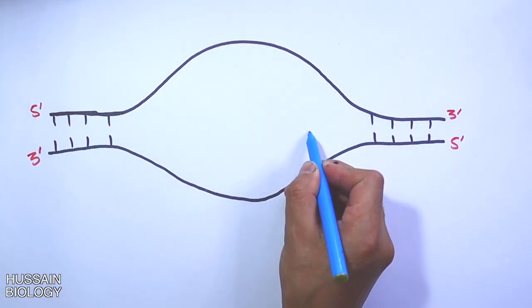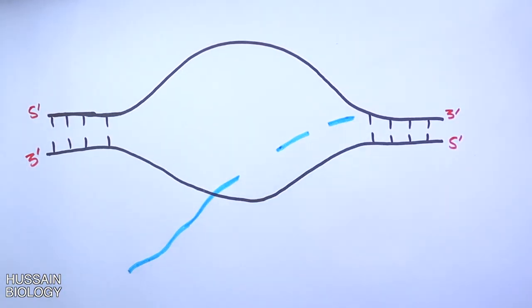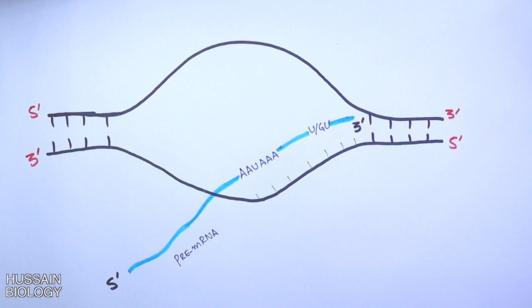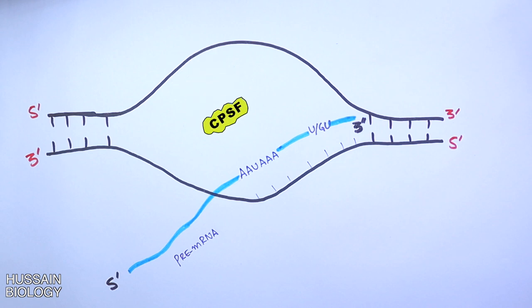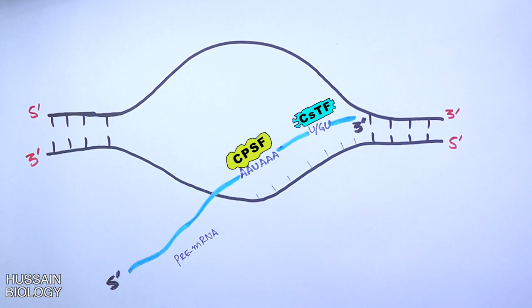Now let's get to the mechanism. In this diagram we have the DNA molecule on which mRNA synthesis has taken place, and from this we get the mRNA molecule as shown. The mRNA has the AAU AAA signal and a U or GU rich region. To summarize briefly: CPSF comes in and binds the AAU AAA signal, and then CStF comes in and binds the U or GU rich region as shown in the animation.